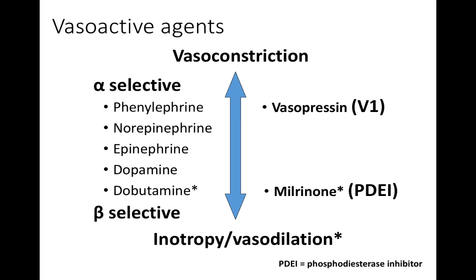In summary, how to broadly think about these vasoactive agents is to consider their hemodynamic effects: is it vasoconstriction, or more inotropy and vasodilation, or a combination of both? As we move into our discussion of the different types of shock, we'll see that each has different hemodynamic targets. Once you determine whether you need more vasoconstriction or more inotropy, selection of agents based on their mechanism of action should become clear.